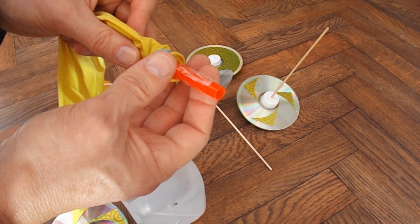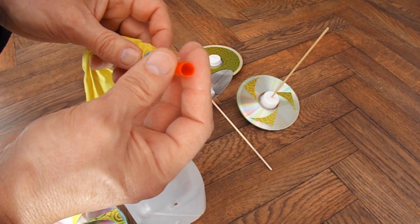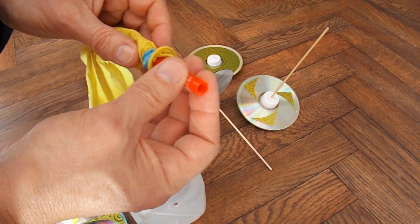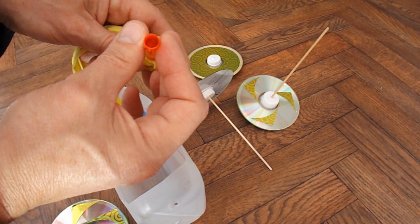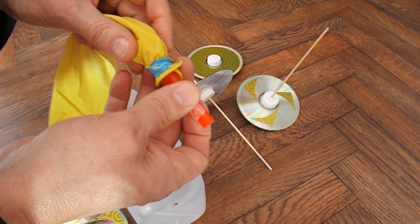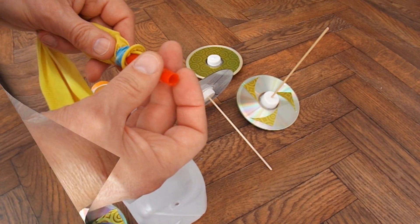A larger tube lets the air out quickly but with not much power. A very small tube lets the air out very slowly with very little power. But somewhere between the two, you'll find a tube that gives you the right speed and the right amount of thrust.